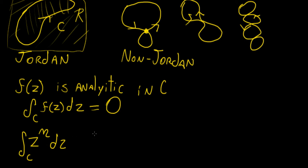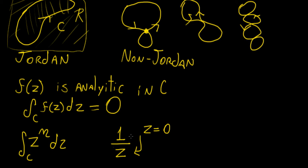What would be an example of a function that becomes undefined at a specific point? We could have something like 1 over z. The problem is we can put essentially any value of z except z equals zero, because when we put z equals zero we get something that approaches infinity — in mathematical terms, this is undefined. So this function would be analytic except for that point, which is called a singularity or pole.